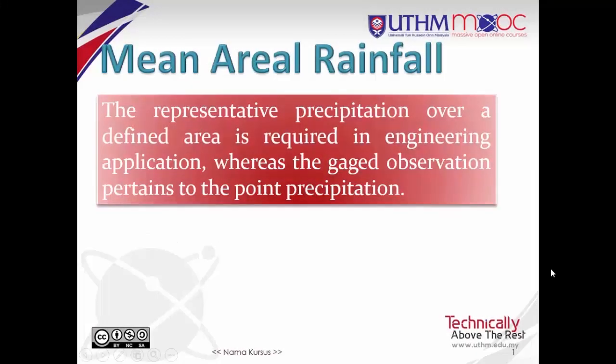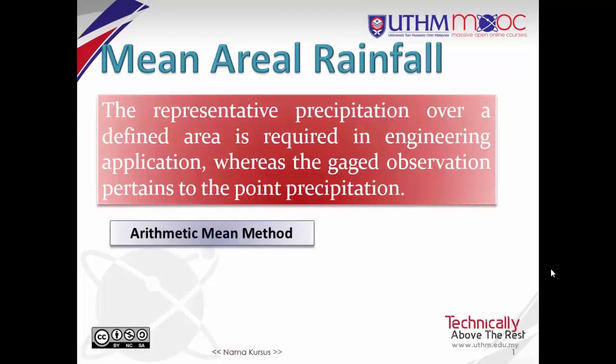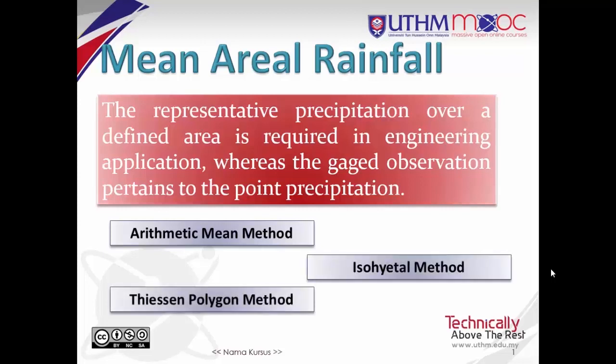For most hydrologic analysis, it is important to know the aerial distribution of precipitation. Usually, average depth for representative portions of the watershed are determined and used for this purpose. The most direct approach is to use the arithmetic average of gauge quantities. This procedure is satisfactory if gauges are uniformly distributed and the topography is flat. Other commonly used methods are the isohyetal method and the Thiessen method.